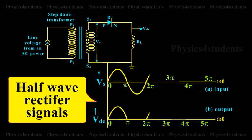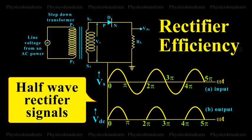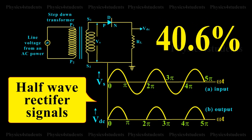Thus, corresponding to an alternating input signal, unidirectional pulsating output is obtained. The ratio of DC power output to the AC power input is known as the Rectifier Efficiency. The efficiency of half wave Rectifier is approximately 40.6%.